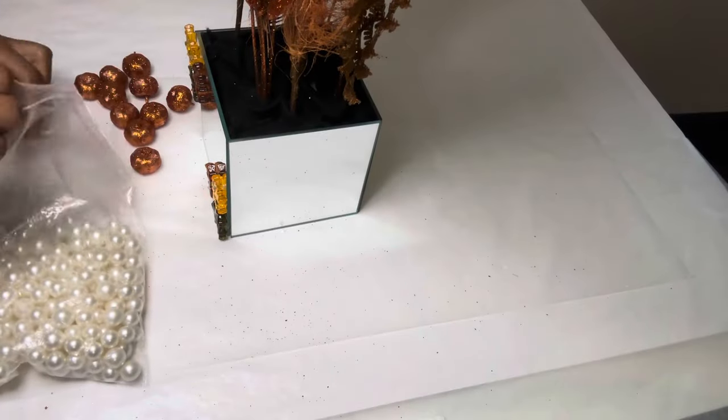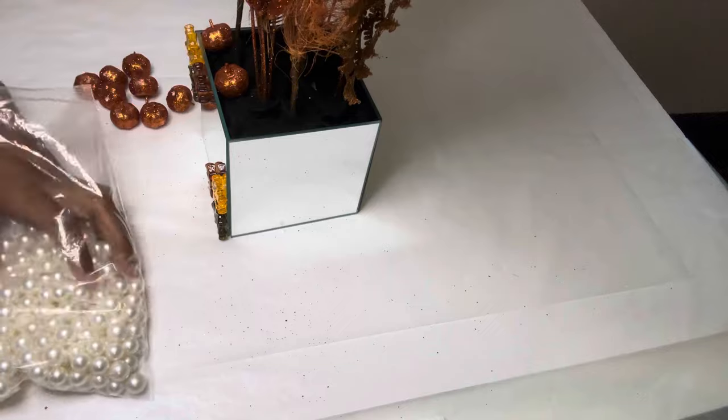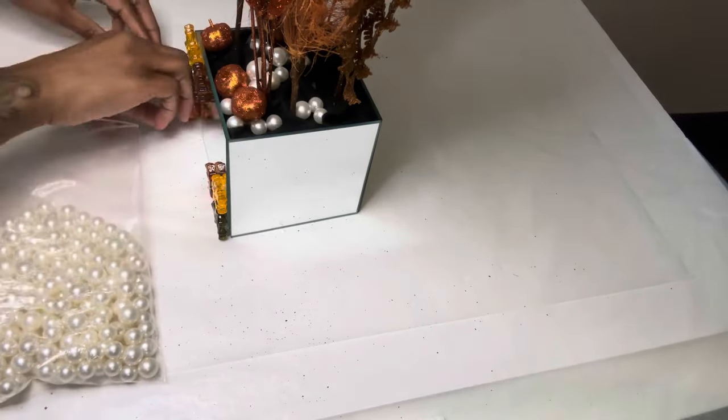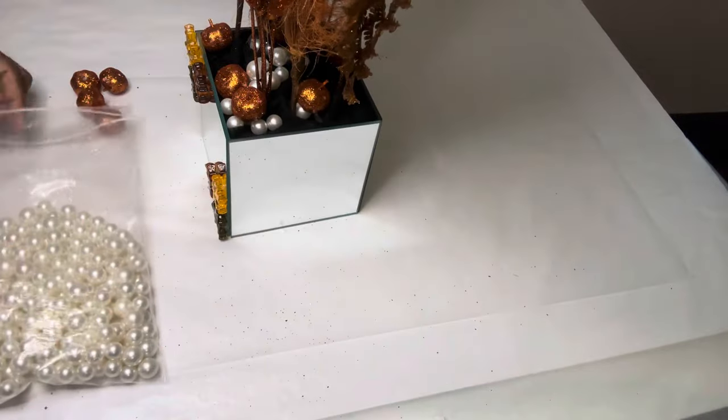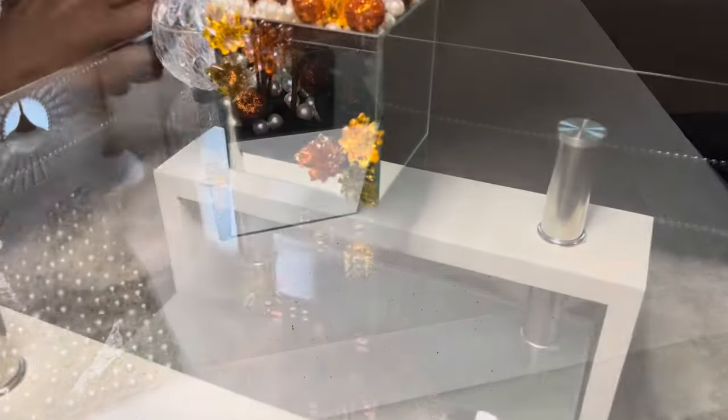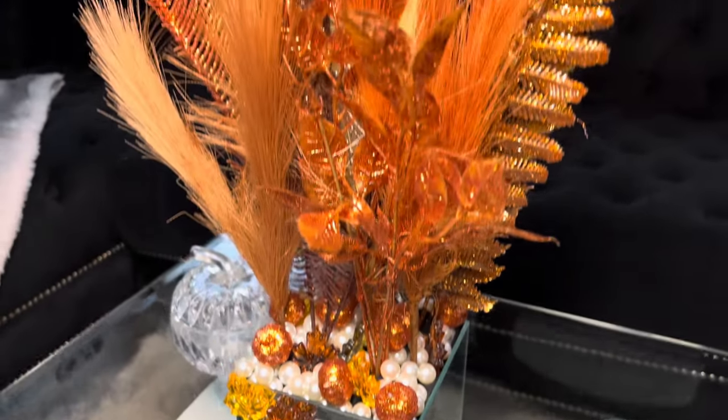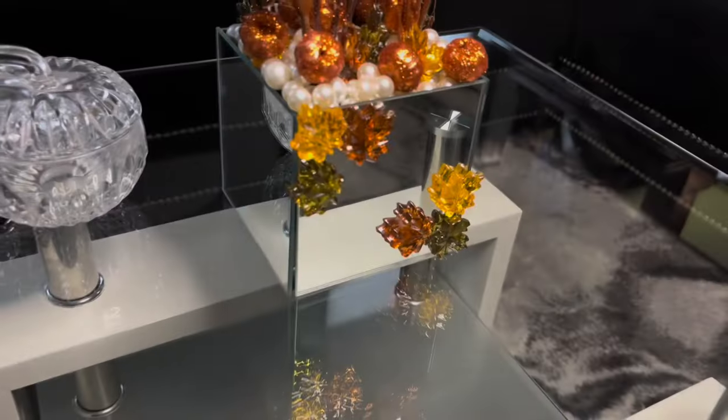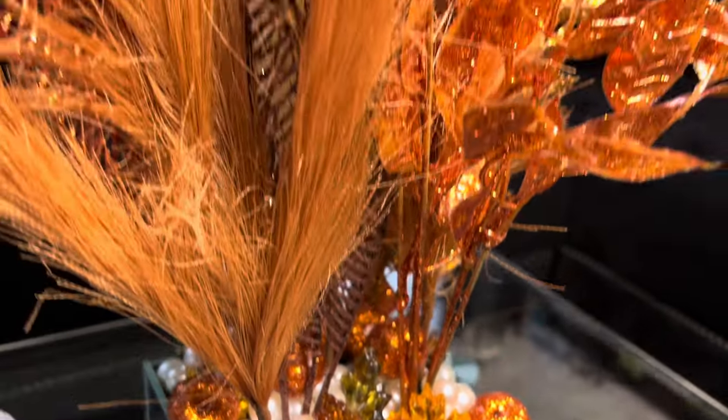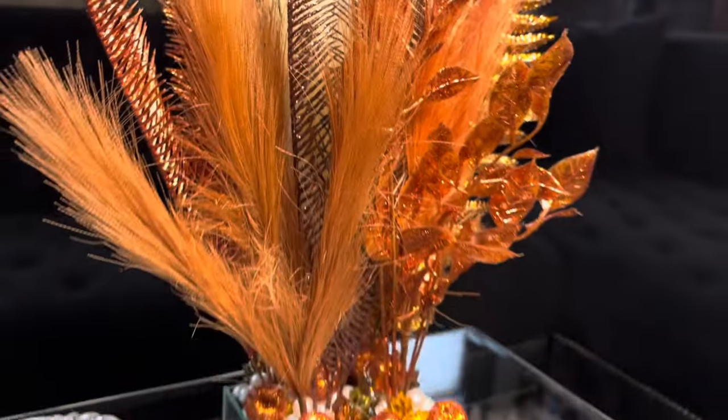I'm using a combination of these pumpkins and also these pearls that I got from Dollar Tree as well, and these will make everything blend in. And just like that, this is how my flower box turned out. The combination of colors is giving very much fall. Comment below and let me know what y'all think.